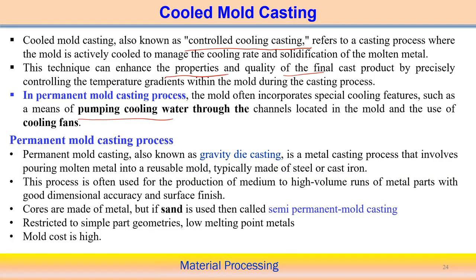Permanent mold casting is also known as gravity die casting — the flow of liquid metal is governed by gravitational force, with no external pressure applied to move the liquid metal within the mold cavity. The metal is poured into a reusable mold made of steel or cast iron. Gravity die casting is most often used for medium to high volume production runs.